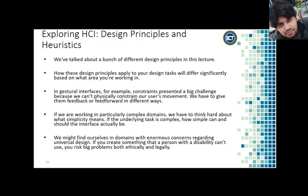We might find ourselves in domains with enormous concerns regarding universal design. If you create something that a person with a disability can't use, you risk big problems both ethically and legally. So you have to brainstorm about these problems and solutions based on the application you choose for your mini project. For the assignment, list out the design principles and heuristics discussed in this class and explain what principles you will embed in your application, why, and how it will fulfill the essence of those design principles.